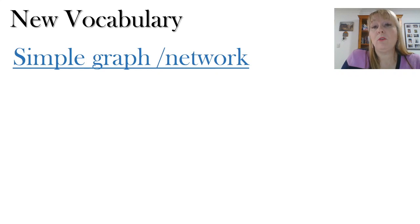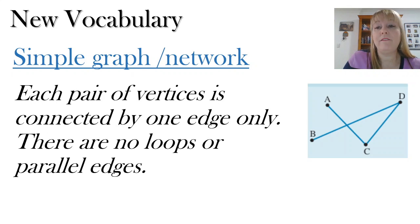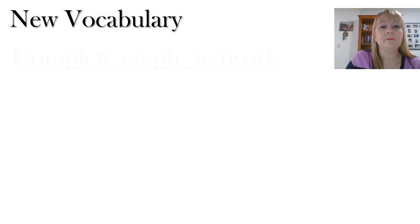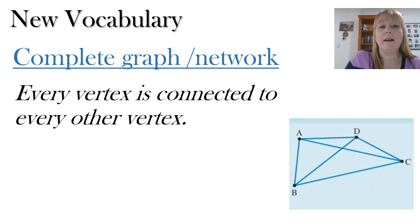We have something called a simple graph or a network. And this is where every pair of vertices is connected by only one edge. And there are no loops or parallel edges. So you notice this is an example of a simple graph. We've got no double towns being doubled up with two roads going between the same two towns. A complete graph is one where every vertex is connected to every other vertex. And this one here is also a simple graph because you notice there's no loops as well. So you can have terminology where you've got one or two descriptions will apply to the same graph or network.